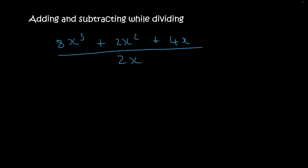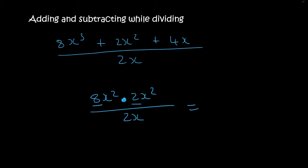Students typically struggle with these kind of questions. In the previous lessons we were looking at questions where we had a multiply in between, and so the 8 and the 2 didn't have any exponents. So we multiplied. Then the x and the x — you simply add their exponents, and so you get x to the 4.